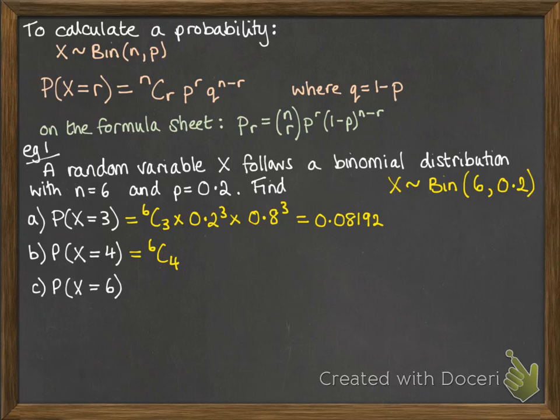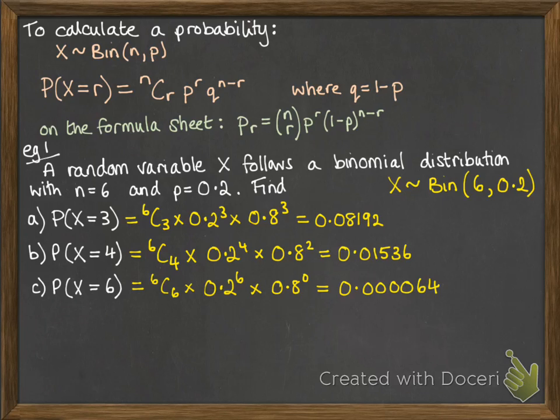Doing it for 4, we would have 6 choose 4 times 0.2 to the power of 4 times 0.8 to the power of 2. 6 minus 4 is 2. And finally, the probability that x equals 6. Just have a think about what that means. We're doing 6 trials, and this is asking us what's the probability that all 6 of them are successful. So we'd expect that number to be fairly small. When you're doing these, you should have a think in your head about what you think the answer should come to, so that you can just be mentally checking that it's about what you expect in case you've made any mistakes.